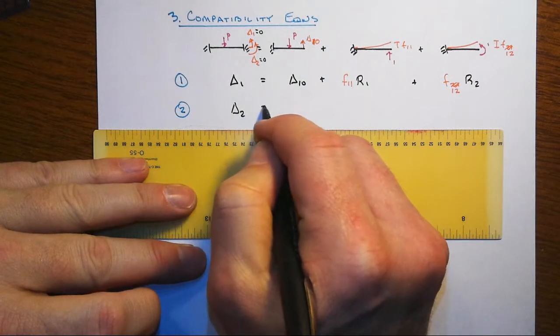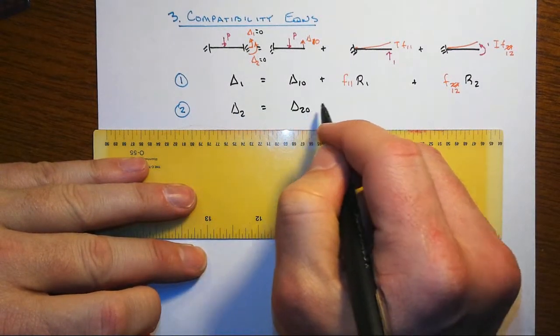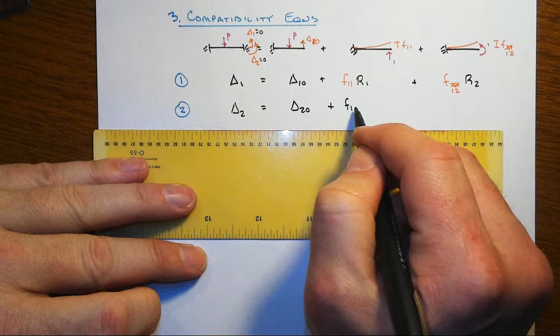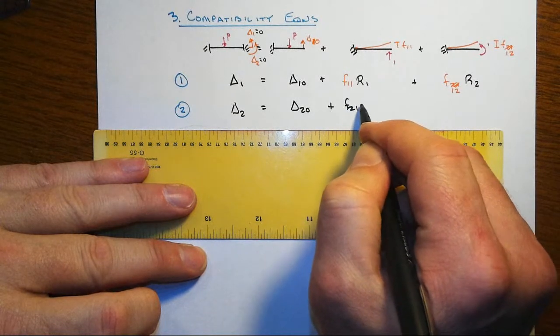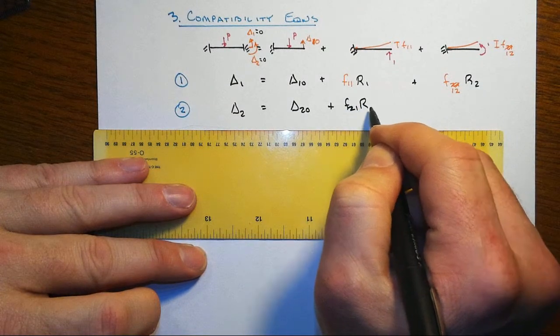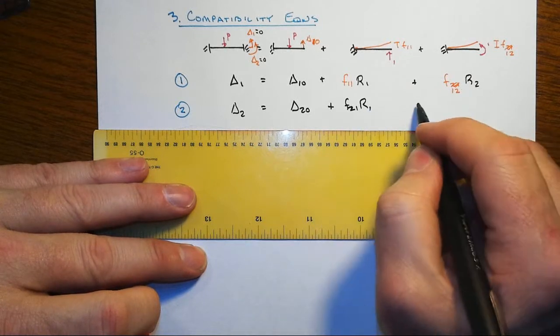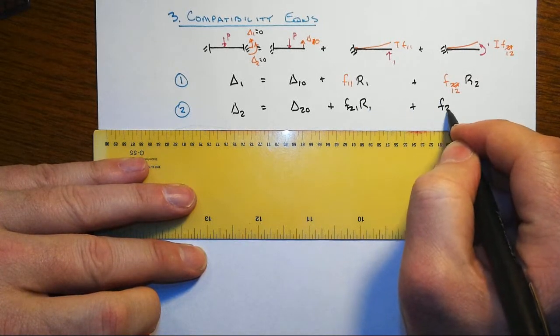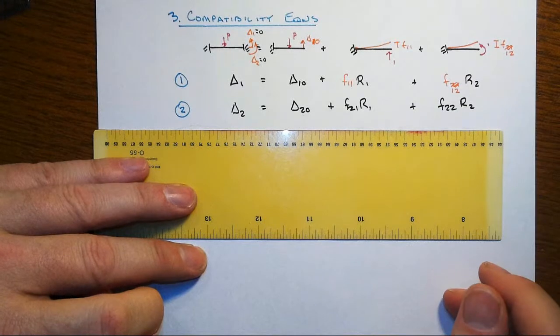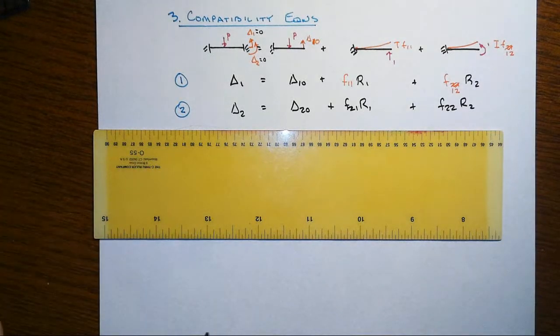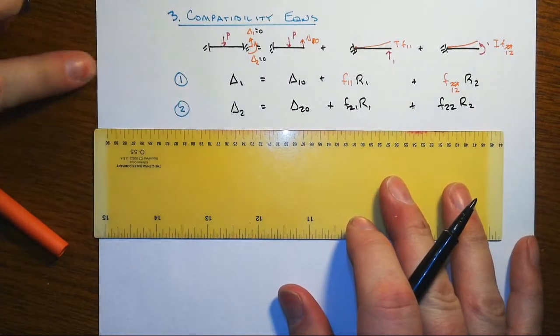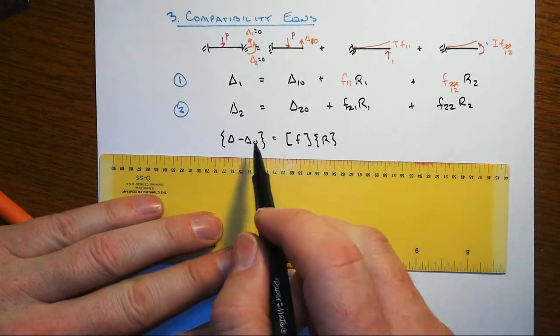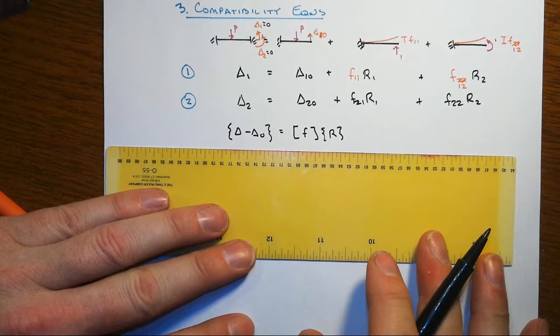The second one then is going to be delta two: zero plus F at two caused by the reaction or unit load at one times the reaction, plus then F22 R2. Now in the previous steps we've already performed those calculations; we can put them in this matrix form that you see here.